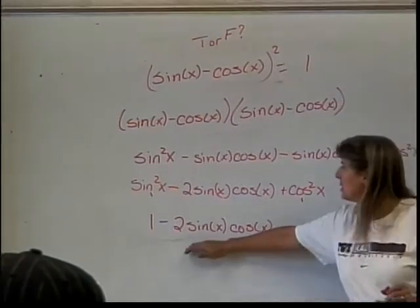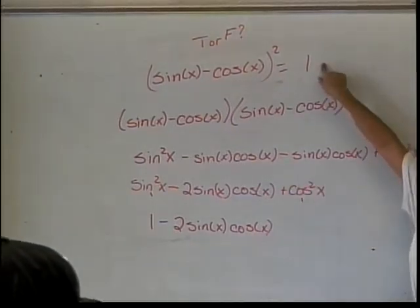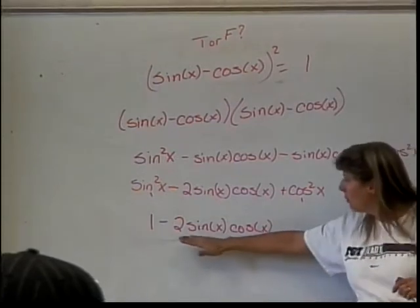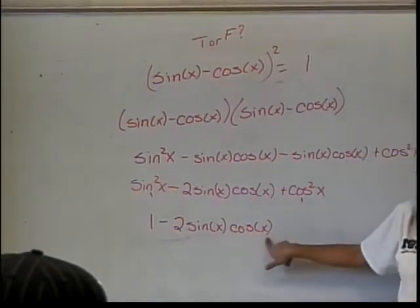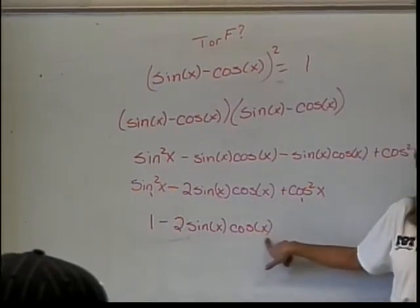In order for this thing to end up being 1, what can you tell me about this value here? It needs to be gone.